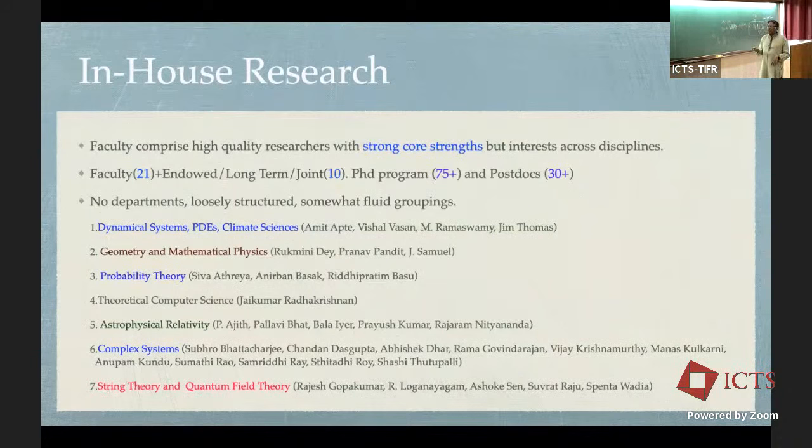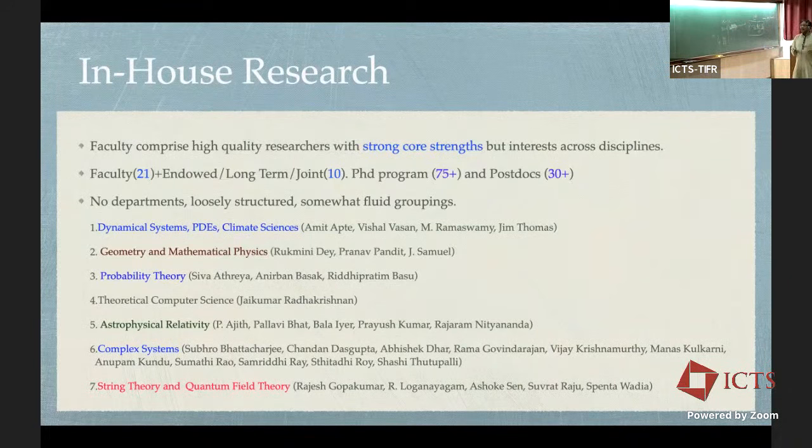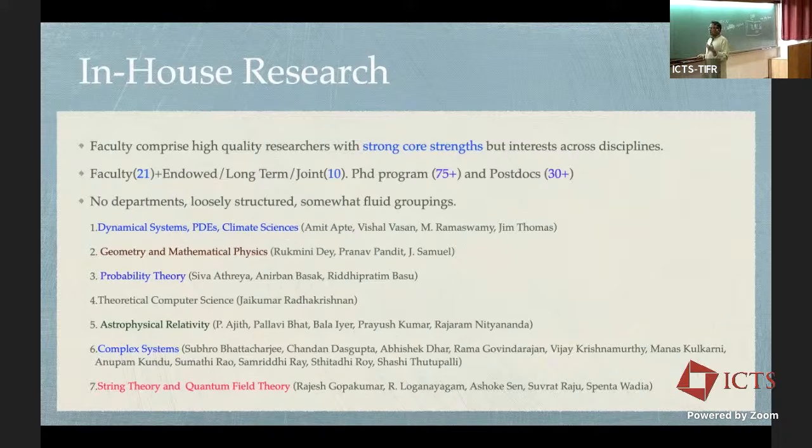In the more physical sciences, we have astrophysics — related to some of the topics in the school. Complex systems is a very broad topic which includes statistical mechanics, fluid dynamics, condensed matter physics, and quantitative biology. And finally, string theory, quantum field theory, and quantum gravity.